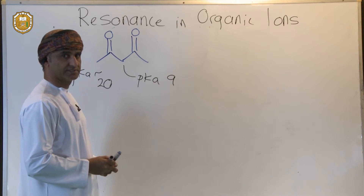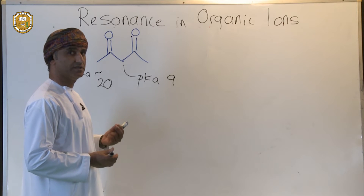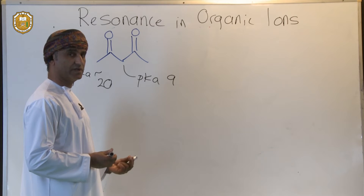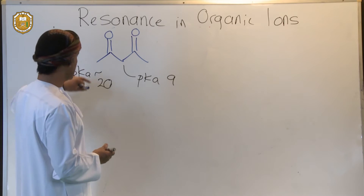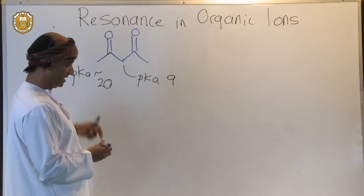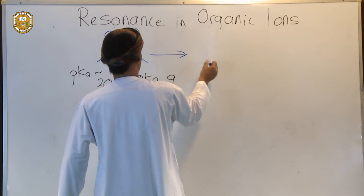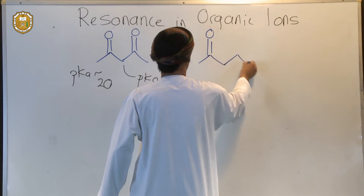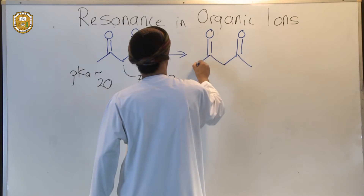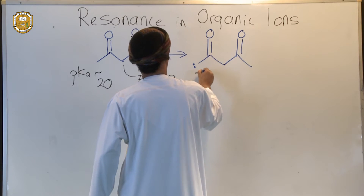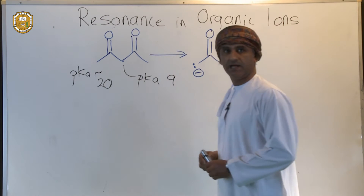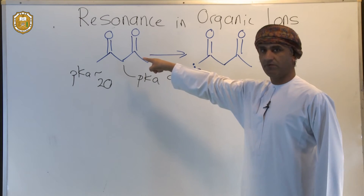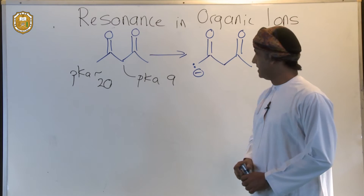In order to understand this relative acidity, we need to draw the relative conjugate bases — the alpha-carbonyl anions. If we take a proton from this alpha position using a suitable base, we get something like that. That's the alpha-carbonyl, the conjugate base at that position of the beta-ketoester.